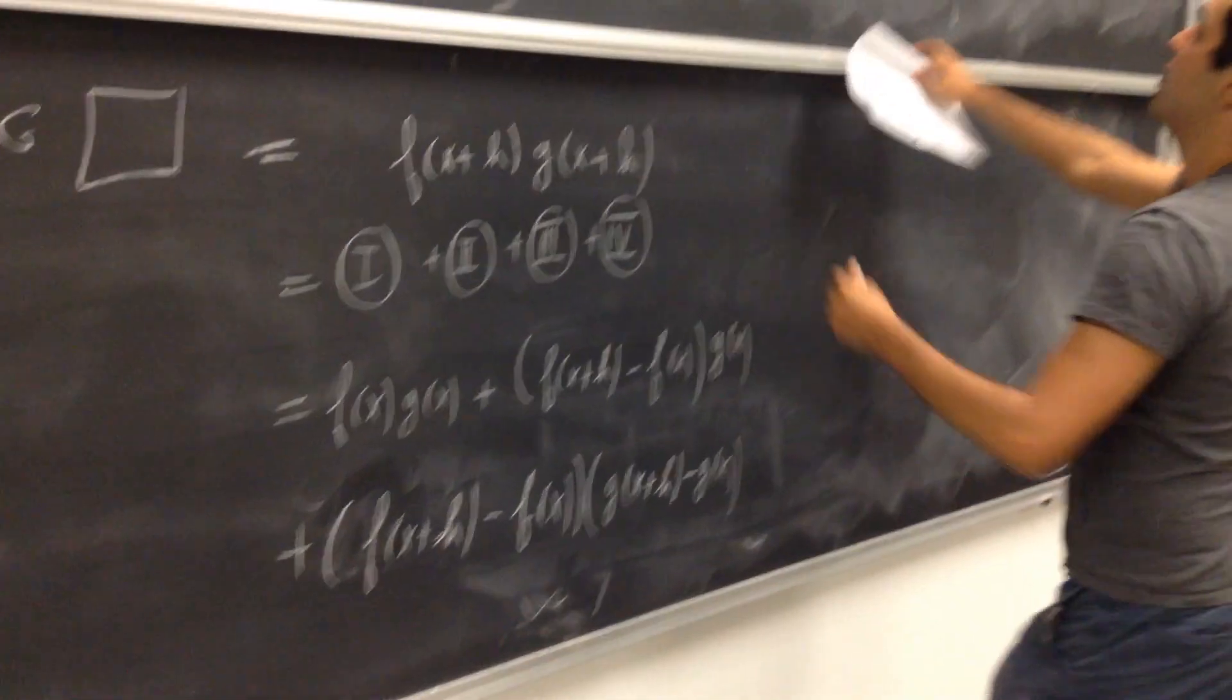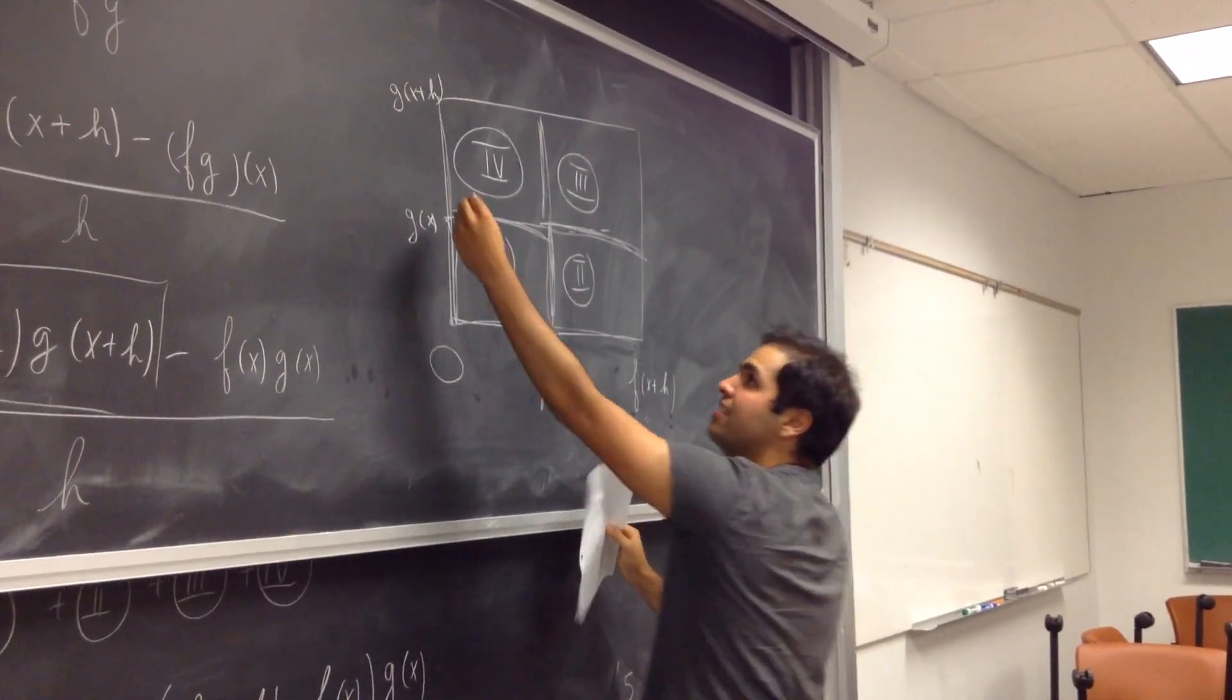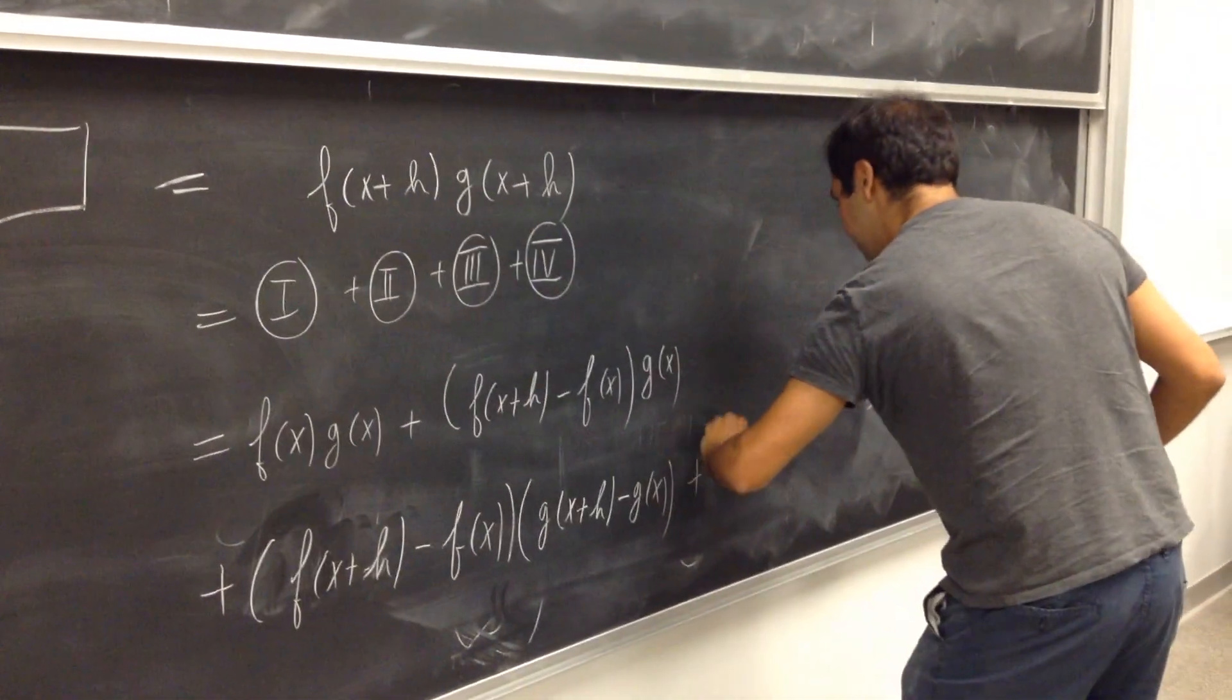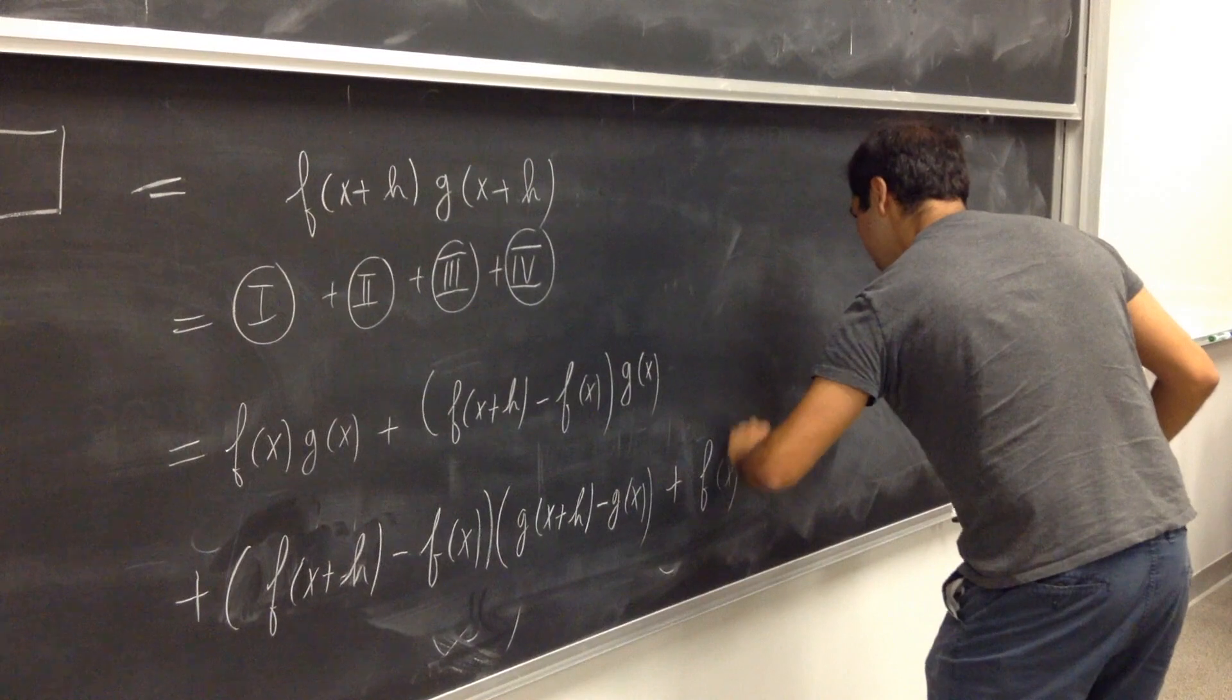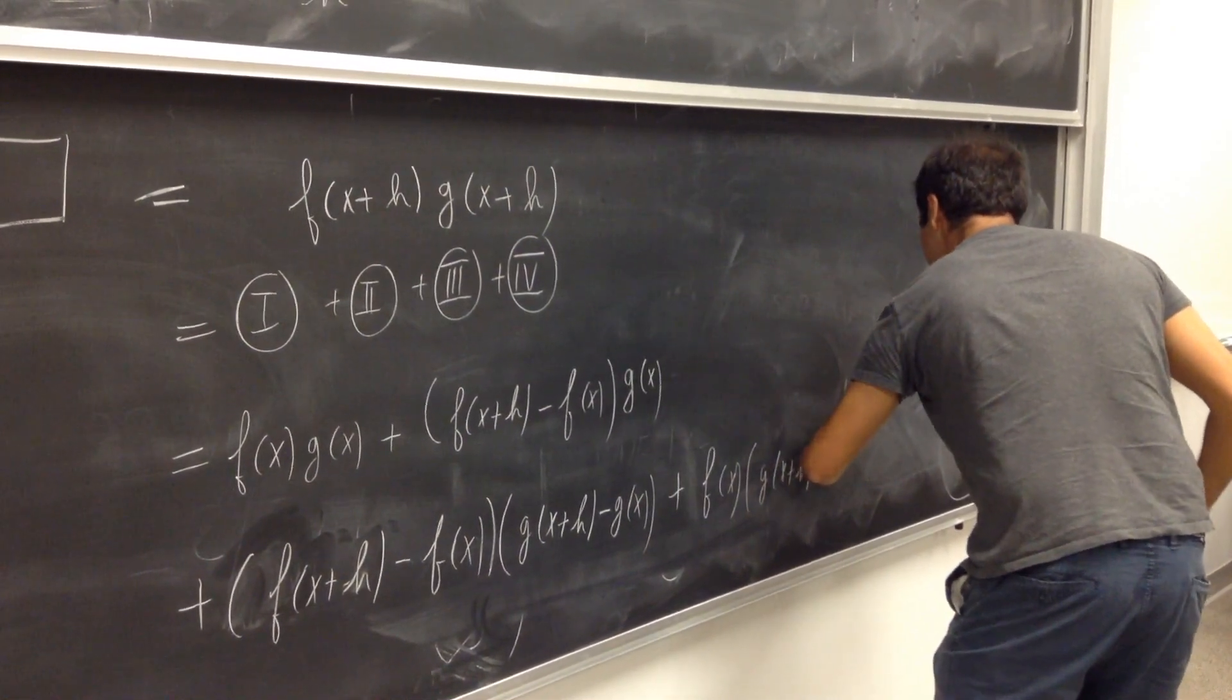And lastly, for the fourth one, the base is f of x, and the height is g of x plus h minus g of x. So f of x times g of x plus h minus g of x.